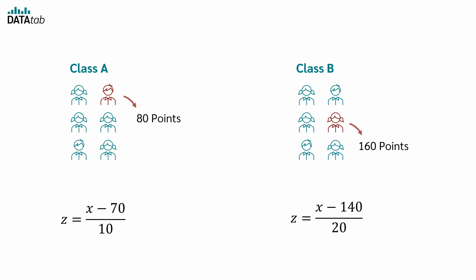To do this, we simply calculate the z-score of Max and Emma. We enter 80 for x and obtain a z-score of 1, and we enter 160 for x and also get a z-value of 1. Max and Emma's z-scores are therefore the same. This means that both pupils performed equally well relative to the average performance and variance in their respective classes. Both were exactly one standard deviation above the average for their class.